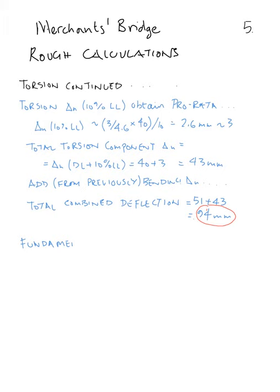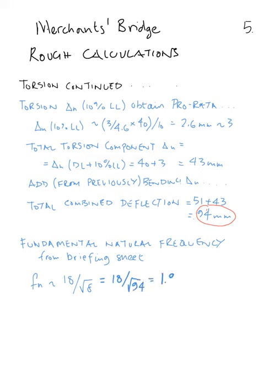Now we're at the final stage of the exercise which is to work out the fundamental natural frequency. If we go back to the briefing from the worksheet, we can find the formula: 18 divided by root of the deflection 10% live load plus dead. This comes to 18 over root 94 which gives us our fundamental natural frequency of 1.9 hertz, in other words cycles per second.